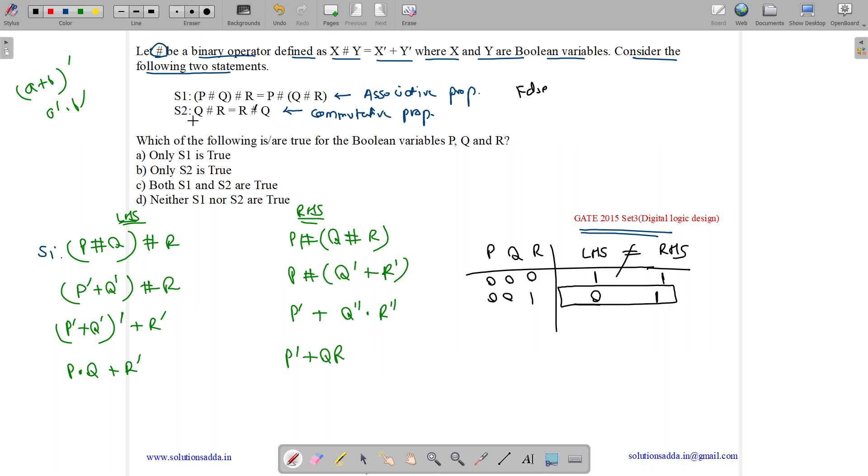Now let us see the second property: Q hash R equals R hash Q. What is Q hash R? Q hash R equals Q' plus R'. This is the LHS, and the RHS is R hash Q, which equals R' plus Q'.